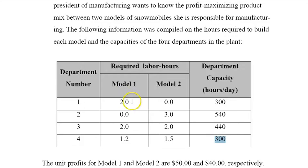To build model one, I would need two hours from the first department, don't need the second department, I need two hours from the third department, and 1.2 hours from the fourth department. To build model two, I only need three hours from the second department, two hours from the third, and one and a half hours from the fourth department. I cannot exceed these requirements - this is what's available to me.